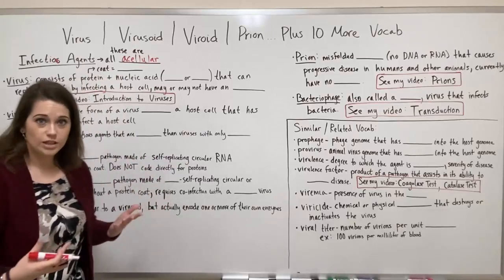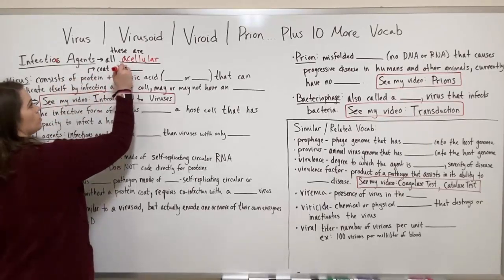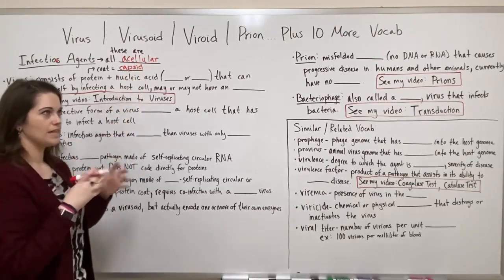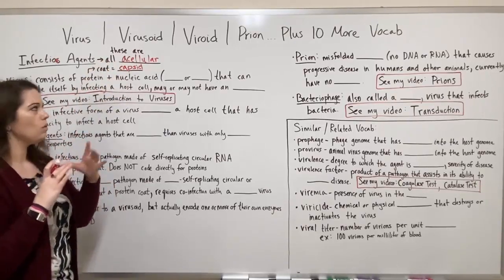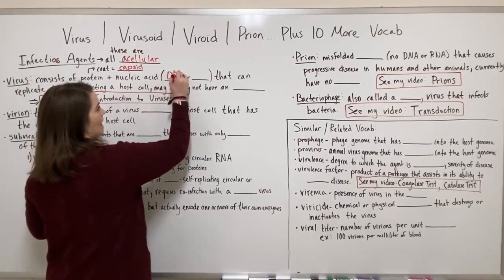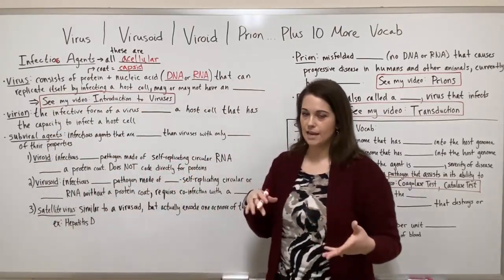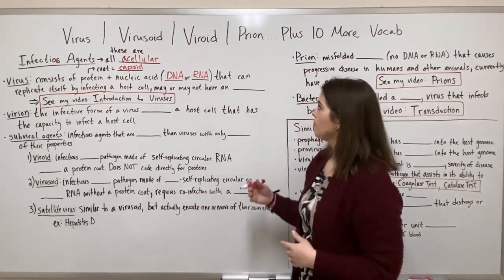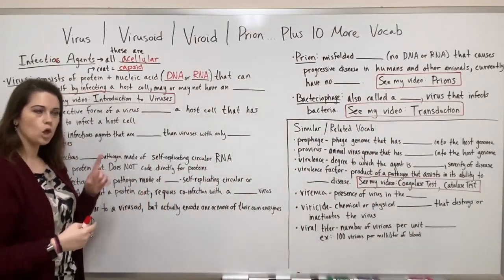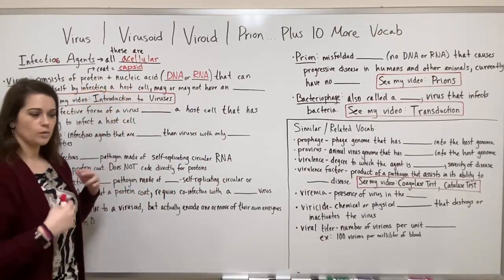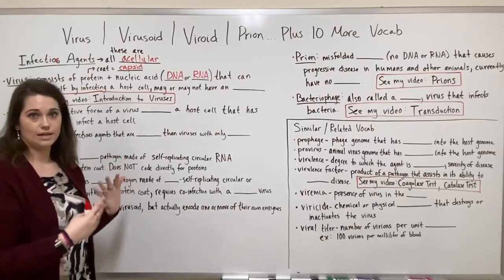Let's start with the most obvious one that most students know: the virus. A virus consists of a protein coat called a capsid, made up of protein subunits called capsomeres. That capsid surrounds a core of nucleic acid, which can be DNA or RNA depending on the specific type of virus. The virus is capable of self-replication as long as it's infecting a host cell, making it an obligate intracellular parasite.